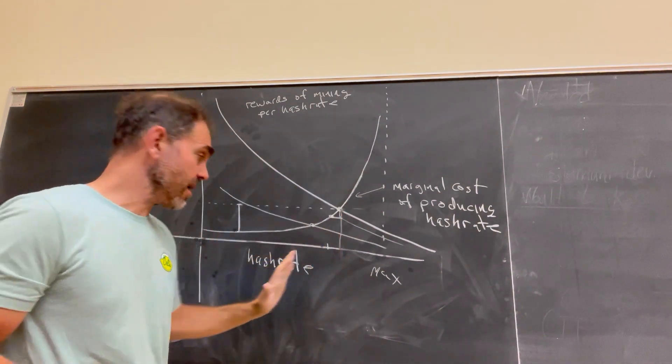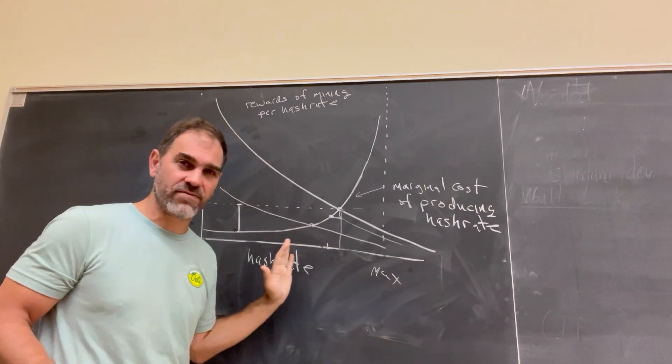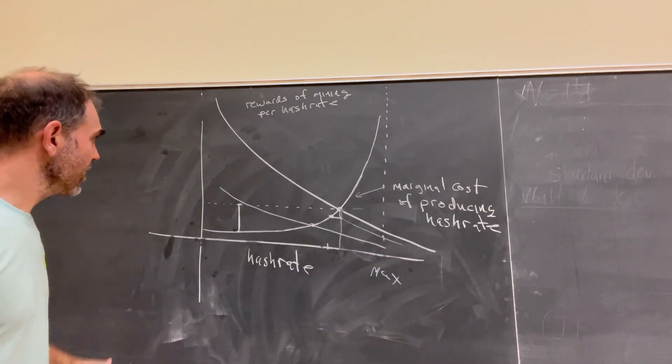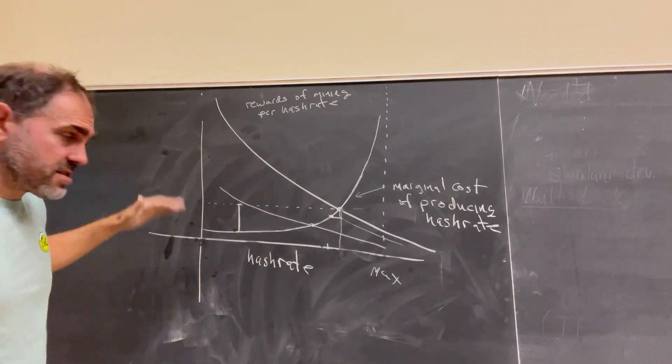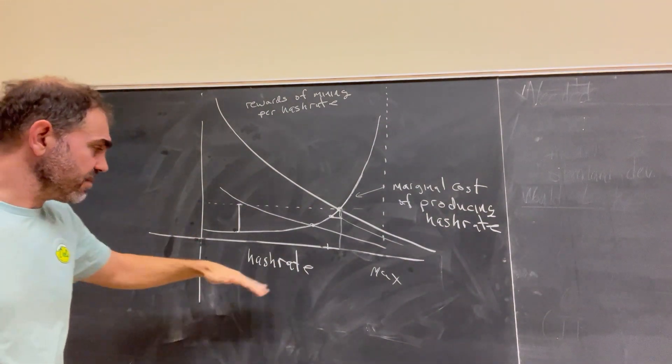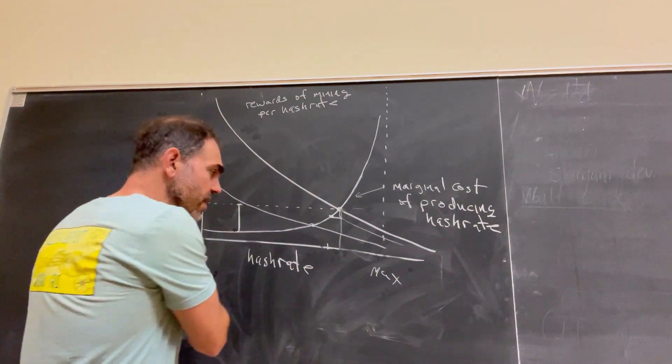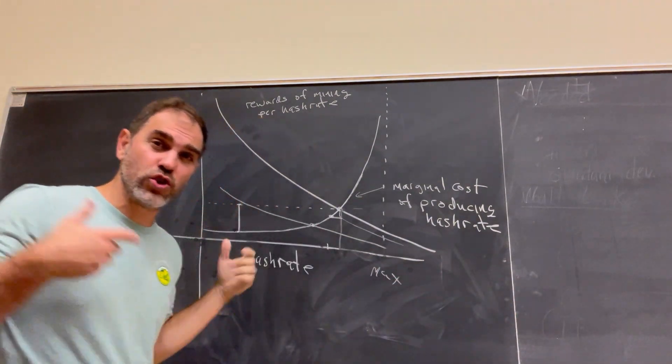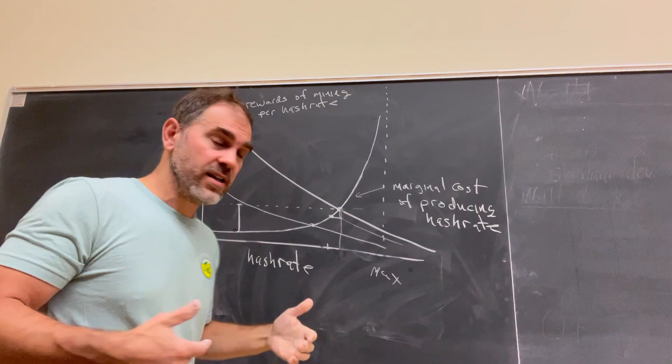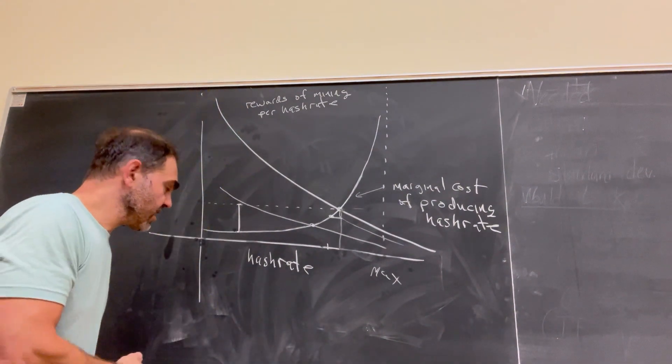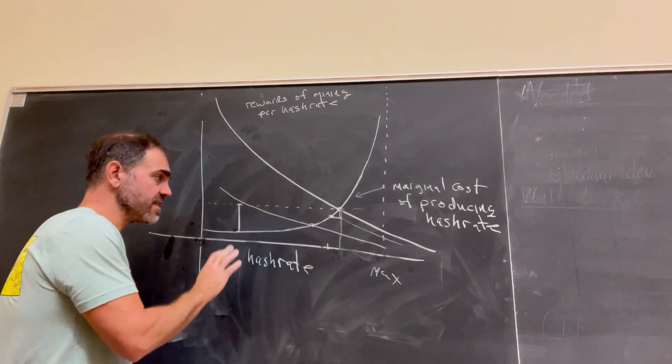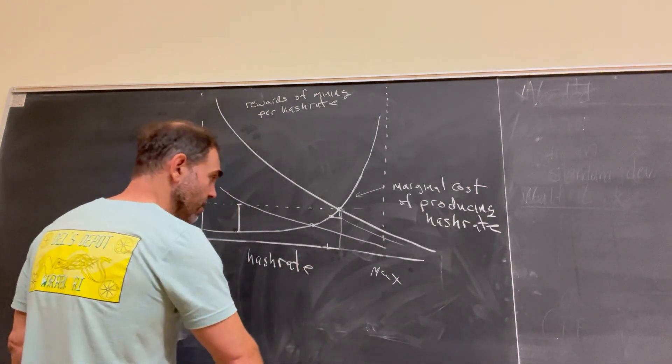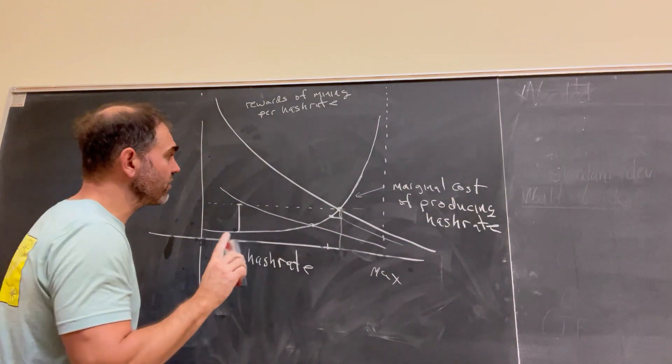Now, notice there is not a number here. I mean, this isn't like, this is kind of a unit-free picture. I mean, it will have units, but in reality, but this is just some sort of dollar number, and this is dollar per time, and this is some hash rate per time. This could be massively expanded to trillions and trillions of tera hashes per second. The important thing is that the slope does not become too flat.